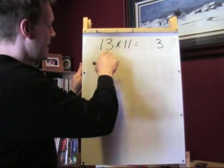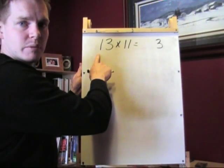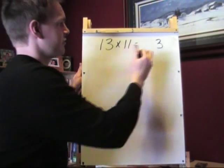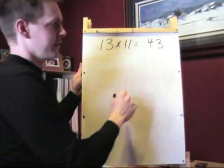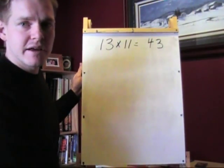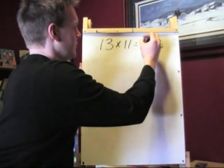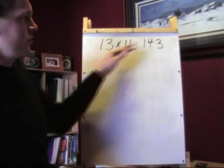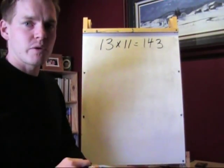Then, you add the number in the ones column and the number in the tens column. So, 3 and 1 is 4. We'll write that down. And now, we just write down the number from the tens column. 13 times 11 is 143.